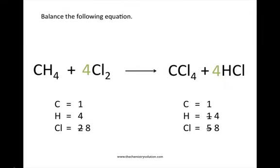Now that we have the same number of each type of atom on the left side and the right side of our reaction arrow, we can consider this reaction correctly balanced. After balancing, the last thing to check is that your coefficients — one, four, one, and four — are in their lowest ratio. Having coefficients not in the lowest ratio doesn't make the equation incorrect, but instructors typically look for the lowest ratio. Using this method, you will usually arrive at the lowest ratio automatically.